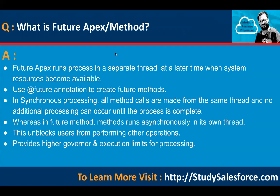What is Future Apex or a future method? Future Apex runs a process in a separate thread at a later time when system resources become available. Use the @future annotation to create future methods. In synchronous processing, all method calls are made from the same thread and no additional processing can occur until the process is complete. Whereas with a future method, the method runs asynchronously in its own thread, unblocking users from performing other operations, and provides higher governor and execution limits.